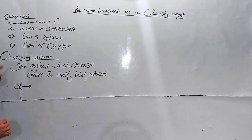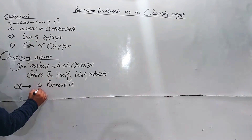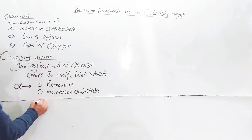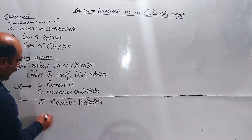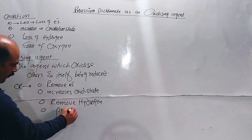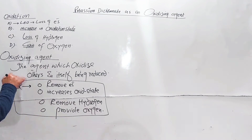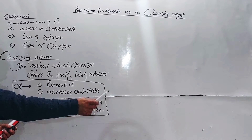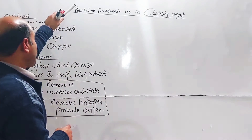Simply, an oxidizing agent is that which removes electrons from others, increases the oxidation state of others, removes hydrogen from others, and provides oxygen to others. That is the oxidation process. This was all the background about oxidation and oxidizing agent. Now, potassium dichromate as an oxidizing agent.